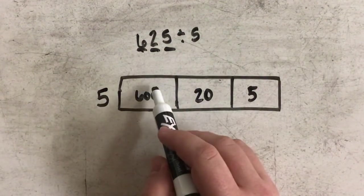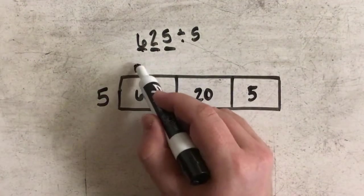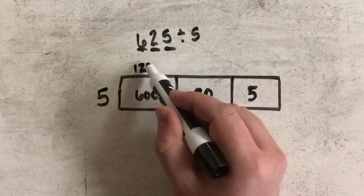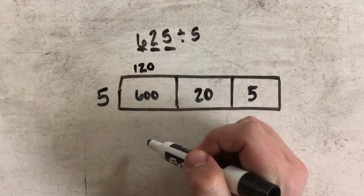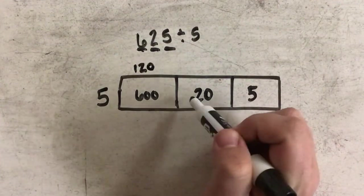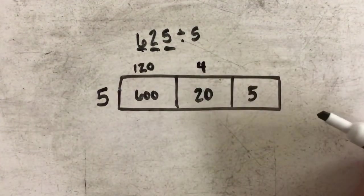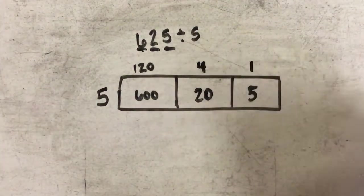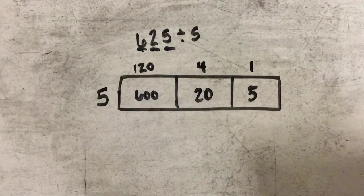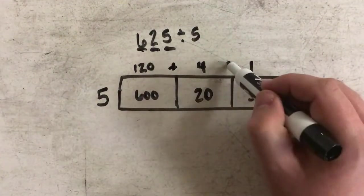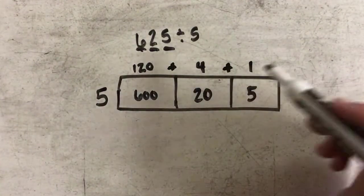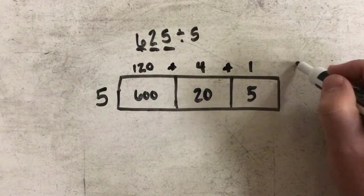5 goes into 600 120 times. 5 goes into 20 4 times. And 5 goes into 5 1 time. And then again, I need to add all of these together, which would give me 125.